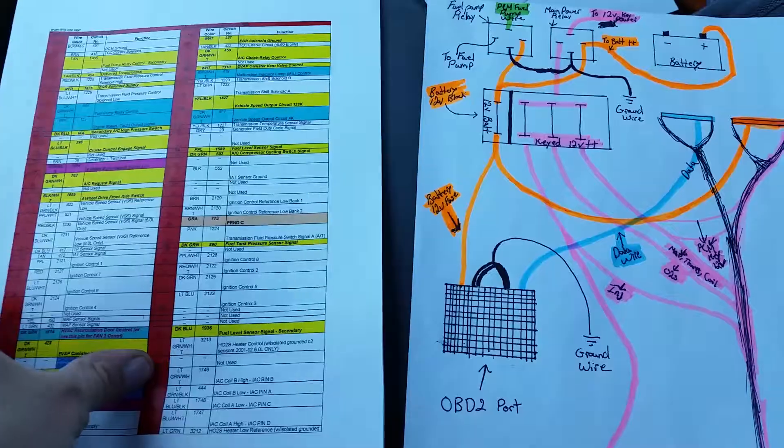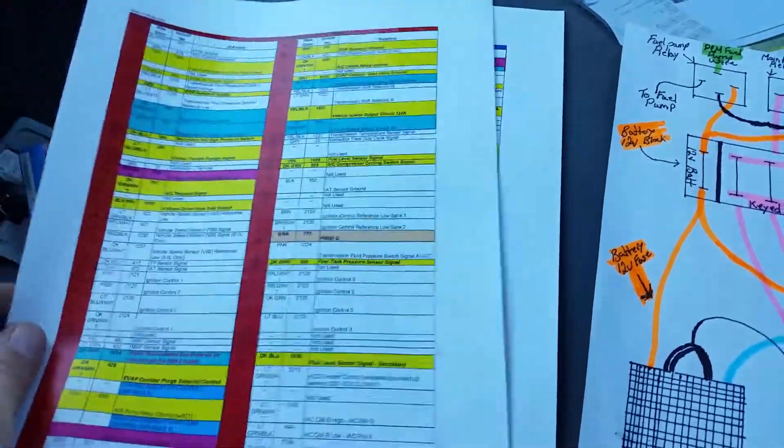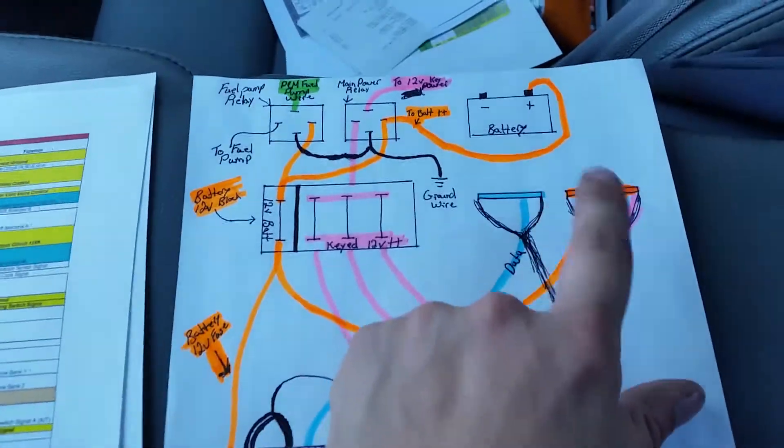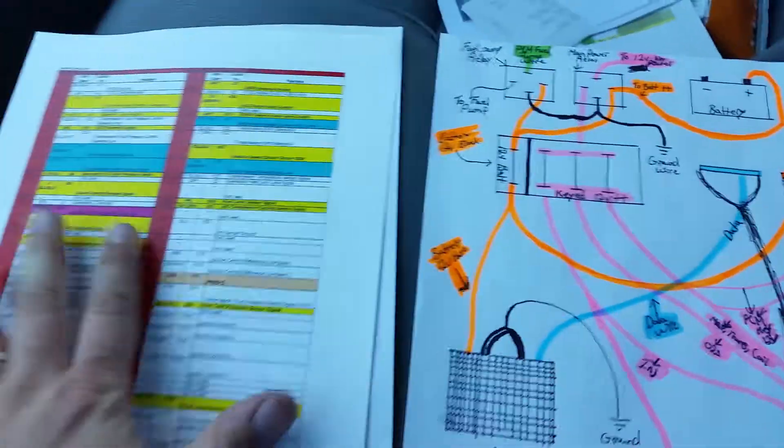These two printouts that I've got - this is for the red plug, that one's for the blue plug. All the yellow on here are wires that I'm gonna eliminate out of the stock PCM plugs. You won't need them.